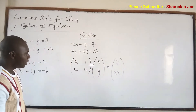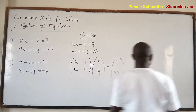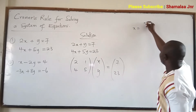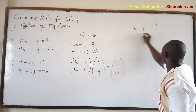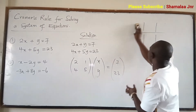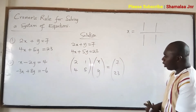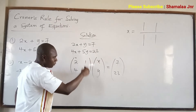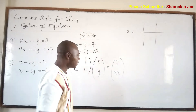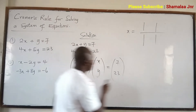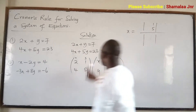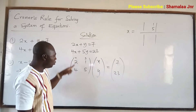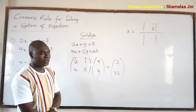Having obtained this matrix, this is how Cramer's rule works. x is equal to the determinant of a modified matrix. Because you are going to find the value of x, this column is for x and this column is for y. To find x, you replace the x-column values — 2 and 4 — with the right-hand side values, 7 and 23.